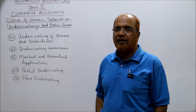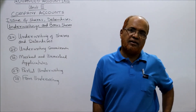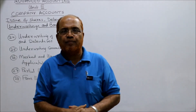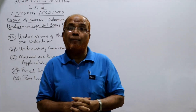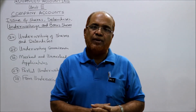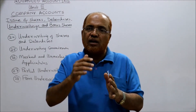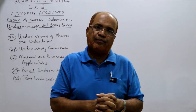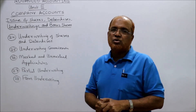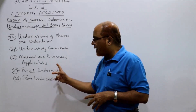There are two types of underwriting: full underwriting and partial underwriting. In full underwriting, all the shares issued to the public are underwritten. In partial underwriting, for example, if 10 lakh shares are issued to the public but the underwriting agreement covers only 8 lakh shares, the remaining 2 lakh shares are issued directly by the company without any underwriting agreement. In case of partial underwriting, no benefit of unmarked applications will be given to the underwriters.